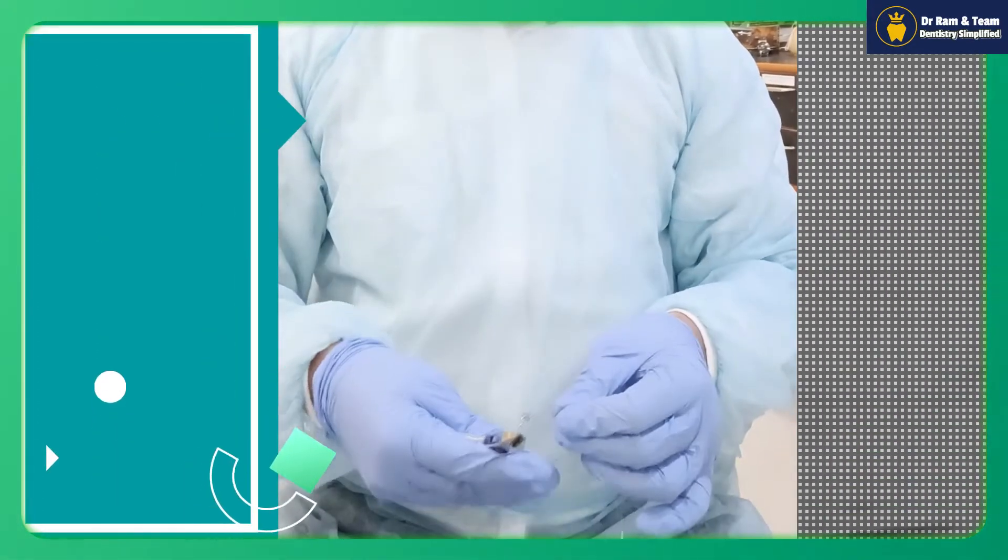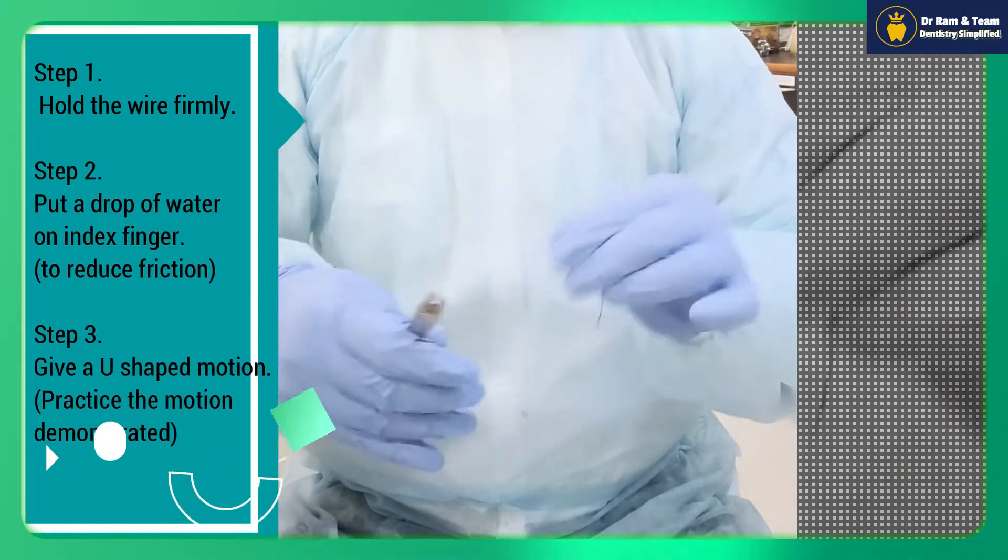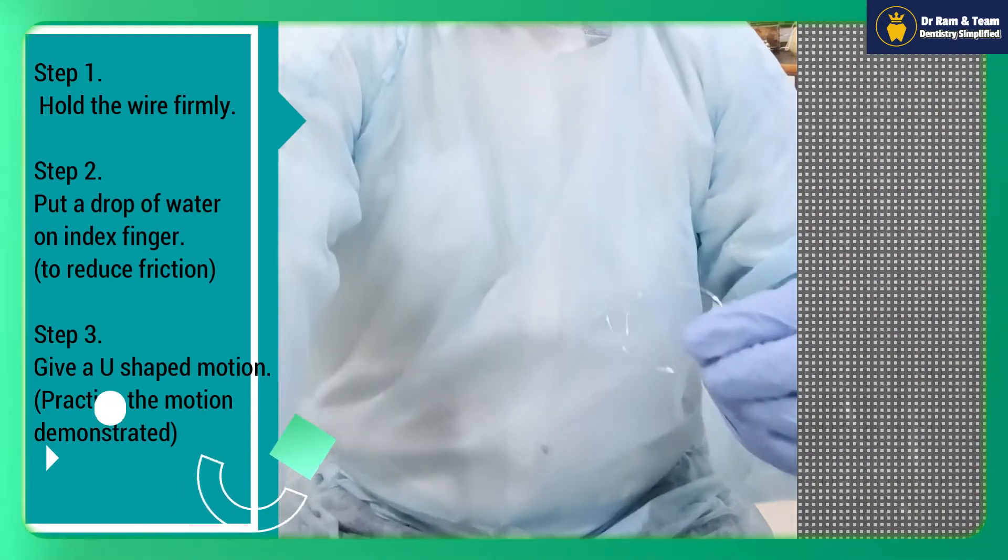Cut the appropriate length of wire as per the arch length and hold it firmly with your hand. From the other hand, give a U-shaped motion, then from the other side give another U-shaped motion. Your wire will get into a kind of U-shape.